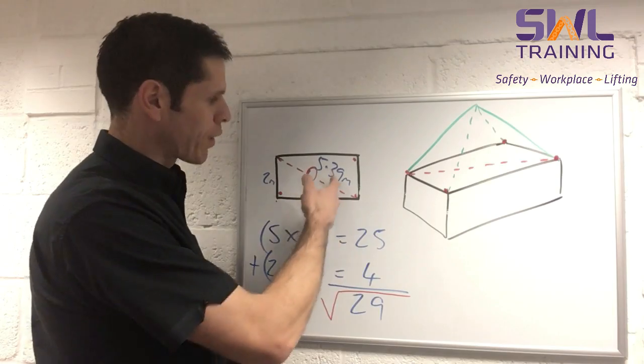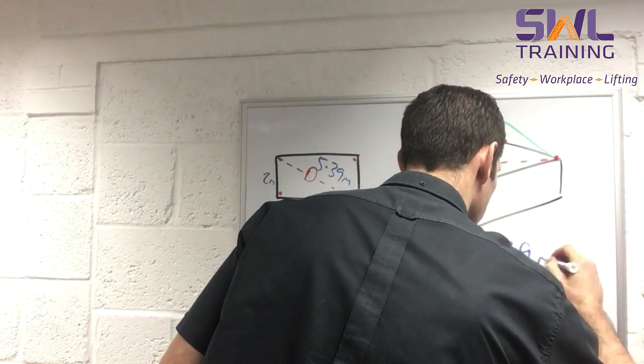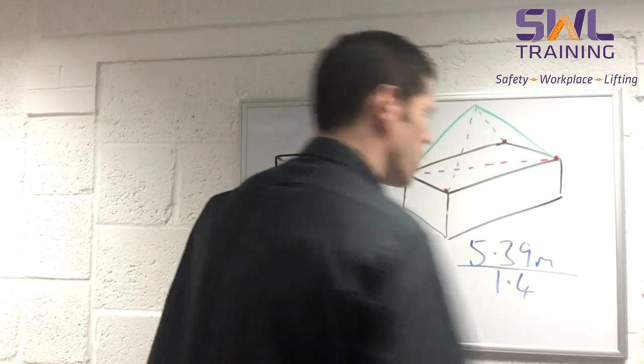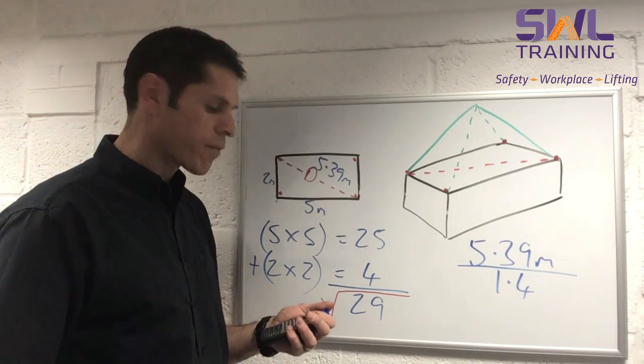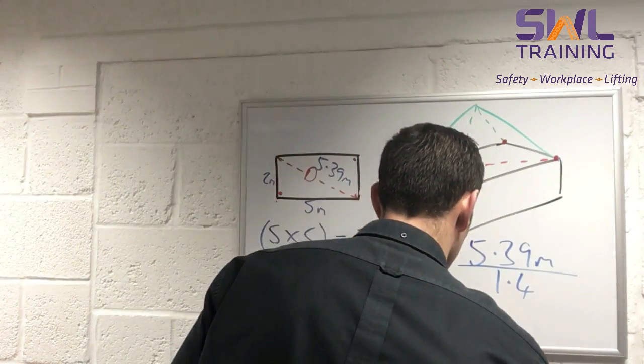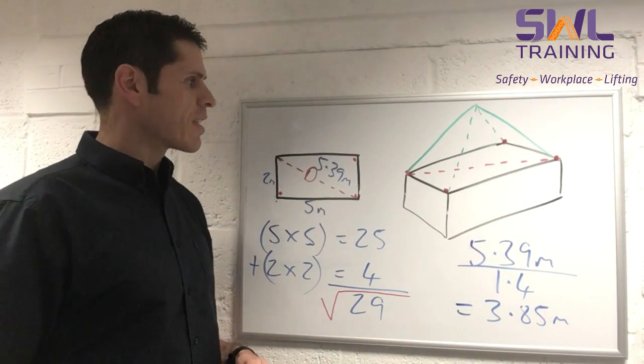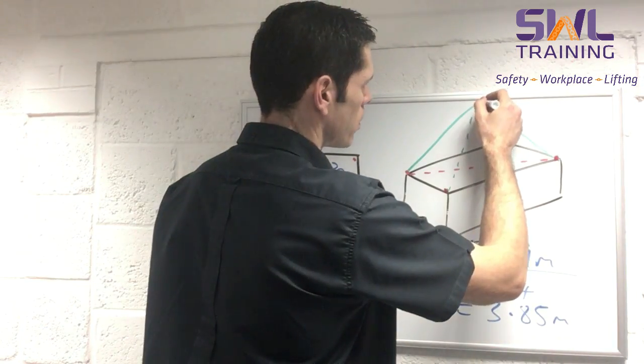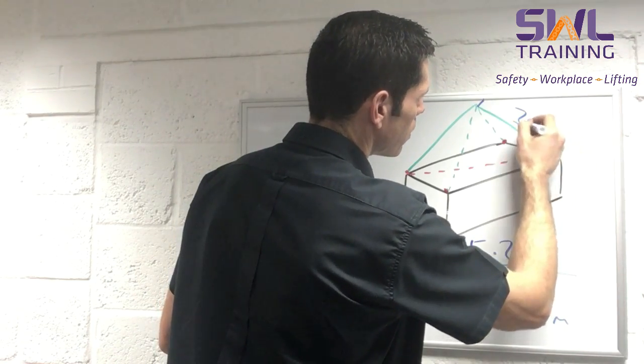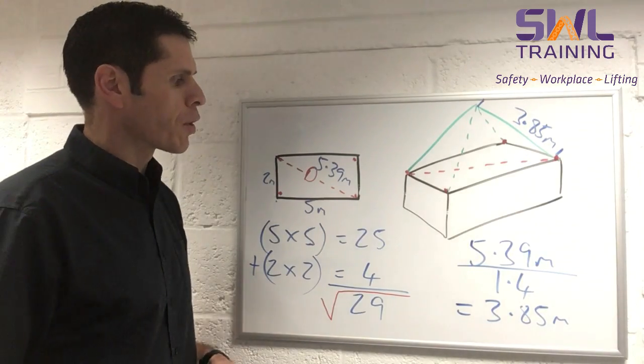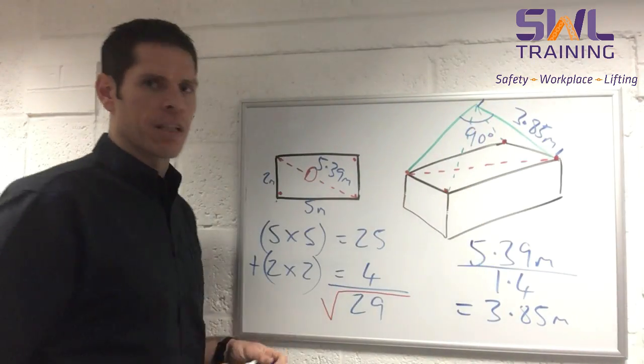So 60 degrees, that would be 5.39. For 90, we're going to divide that by 1.4. So 5.39 divided by 1.4, which gives us 3.85 metres. That then represents our minimum sling length. So a minimum sling length in that case, if we were going at 90 degree included angle, of 3.85 metres.